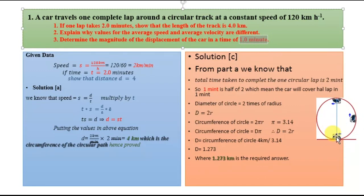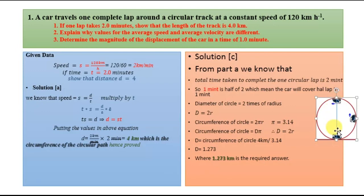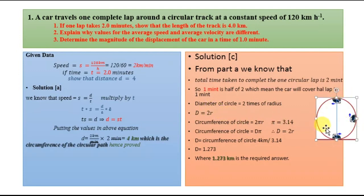If the car starts traveling from this position and completes one lap in two minutes, then in one minute it will complete half a lap. It will travel from this position to the opposite position. We need to find the magnitude of the displacement between these two positions. Looking at the image clearly, it is a circular path, and this line passes through the center of the circle, which is the diameter. The diameter equals two times the radius: d equals 2r.